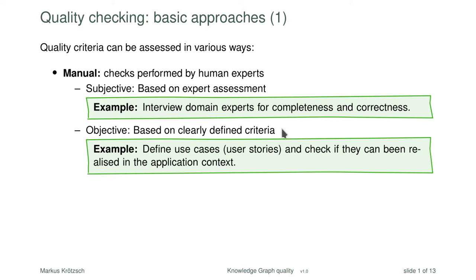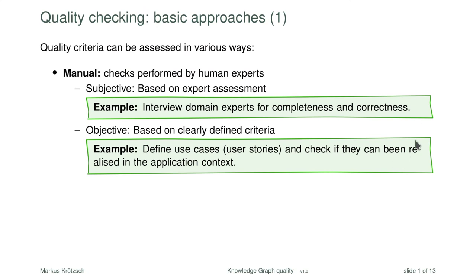You can also have manual measures which are more objective, based on clearly defined criteria. One way is to start your project by defining use cases or user stories. As you go along, you check if these use cases can be realized in the application context. This is similar to how requirements are phrased for software projects — you start with high-level goals of what should become possible by the technology, and you put check marks next to these stories as you achieve that functionality.